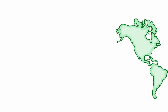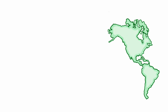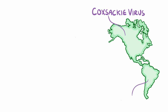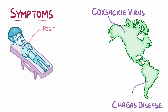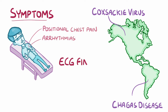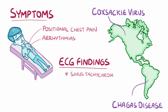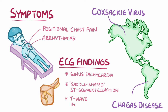As a quick recap, in North America myocarditis is most often caused by viruses like Coxsackie, but in South America a common cause is Chagas disease. Symptoms include positional chest pain and arrhythmias, and classic ECG findings include sinus tachycardia with saddle-shaped ST-segment elevations and T-wave inversions.